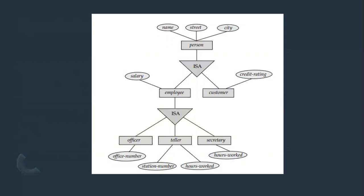We have entities officer, teller, and secretary. Officer has attributes name, street, city, salary, and office number. Teller has name, street, city, salary, station number, and hours worked. Secretary has name, street, city, salary, and hours work. Since the attributes are almost the same, all three are combined together to give 'employee'. Similarly, employee has name, street, city, and salary; customer has name, street, city, and credit rating. Because they share most attributes, employee and customer can generally be called 'person'.